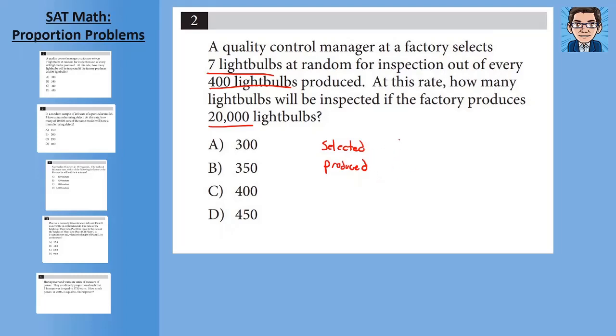So if we have seven selected out of 400, then that's going to equal, we don't know how many we've selected, but we do know that there's 20,000 produced. Now I'm going to cross-multiply, 400x equals 140,000, divide by 400, and you get x equals 350, choice B.